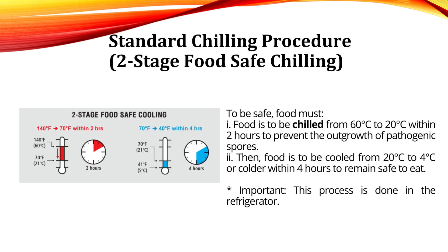This is the standard cooling procedure on how to cool food properly. Food should be cooled quickly. The proper cooling method follows a 2-hour divided by 4-hour rule and happens in two steps. First, food is to be chilled from 60°C to 20°C within 2 hours to prevent the outgrowth of pathogenic spores. Then, food is to be cooled from 20°C to 4°C or colder within 4 hours to remain safe to eat.